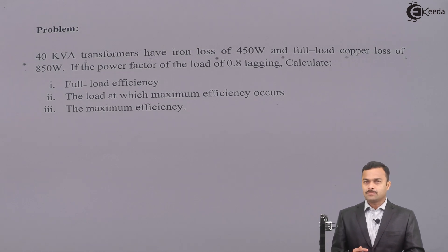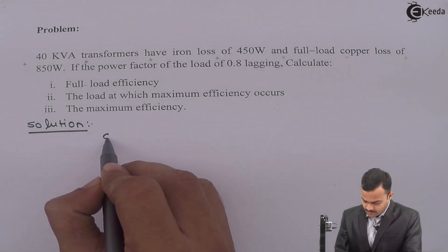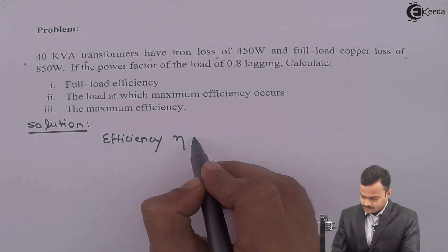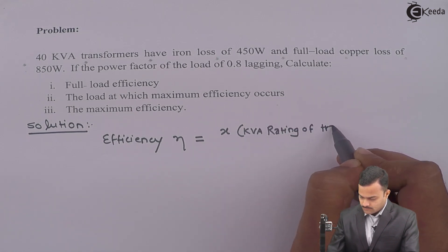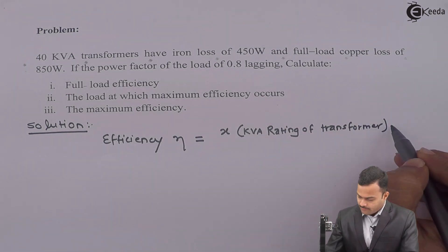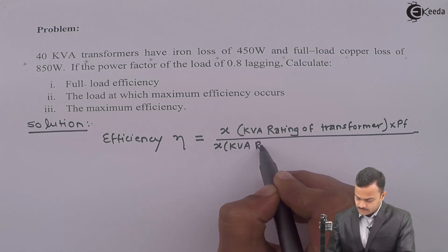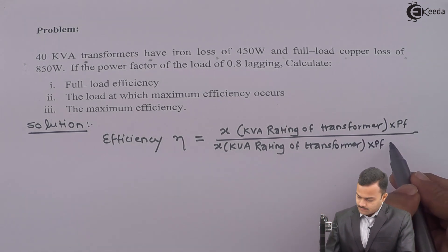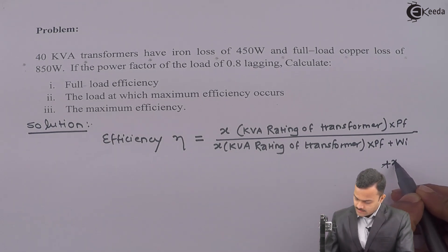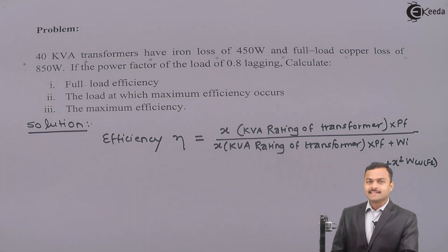This is a problem based on the formula of efficiency, but before solving we will write the formula first. Efficiency equals x multiplied by kVA rating of the transformer multiplied by power factor, divided by x multiplied by kVA rating multiplied by power factor, plus iron loss, plus x-squared multiplied by copper loss at full load.